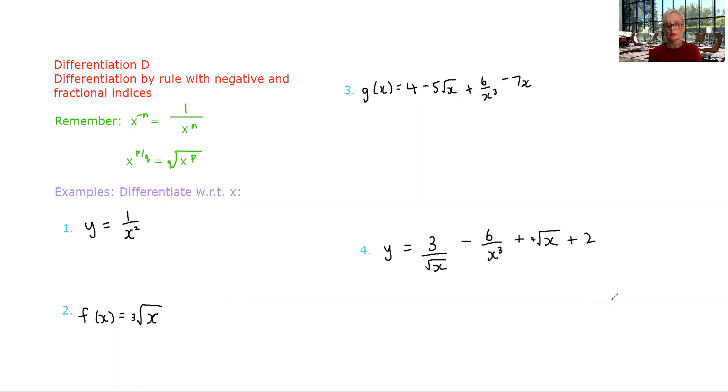The rule for polynomials also works when you have a negative index other than negative one or a fractional index. So we had a rule that we learned in our previous video that if we had y equals ax to the n, then dy dx was anx to the n minus one. So you bring the index down and multiply and then decrease it by one. The same thing happens here.